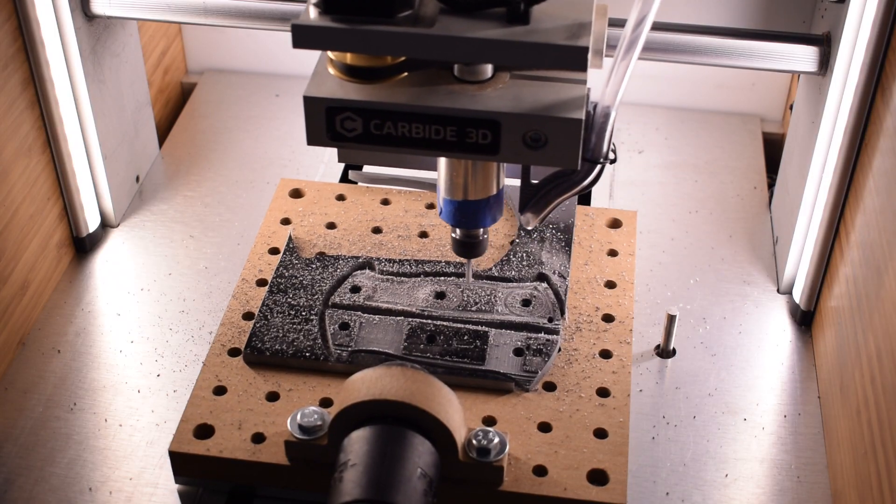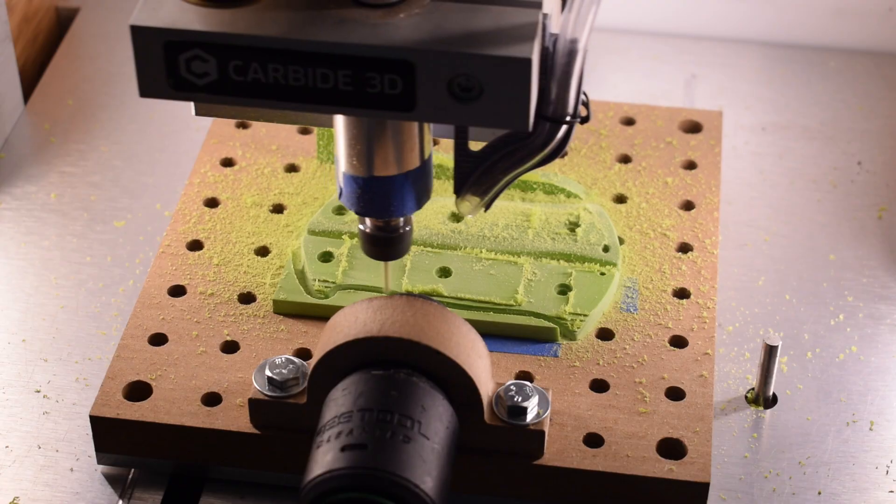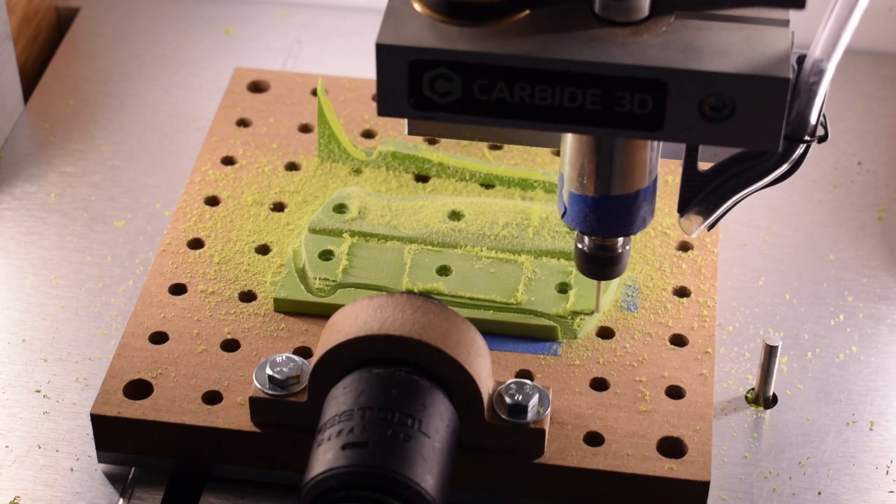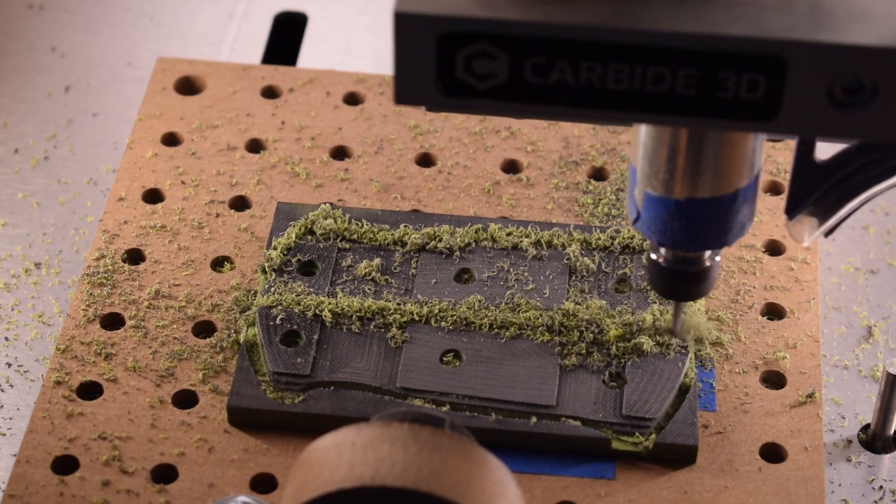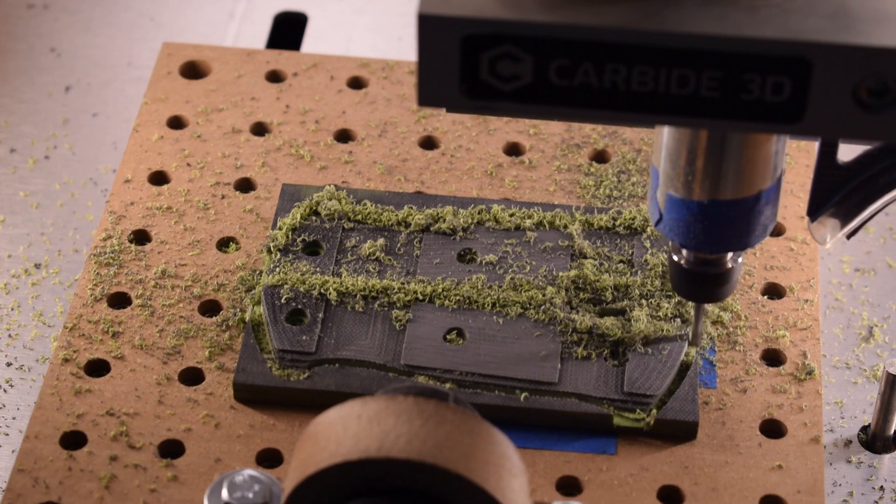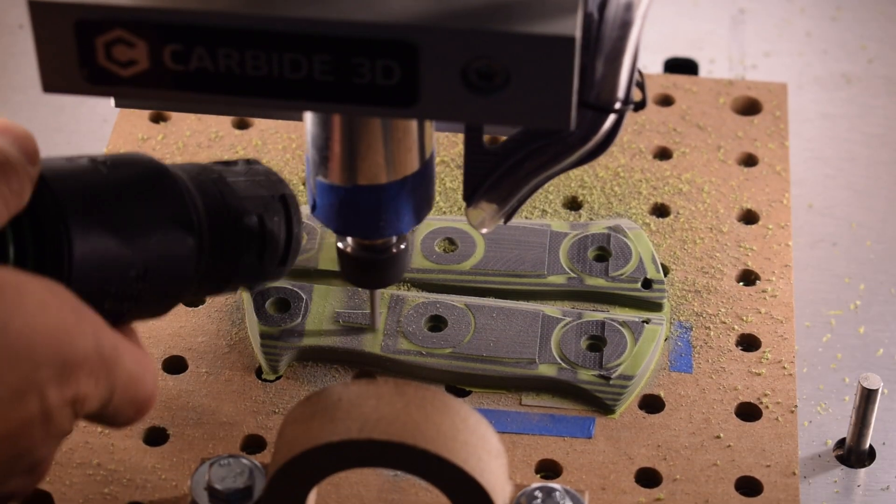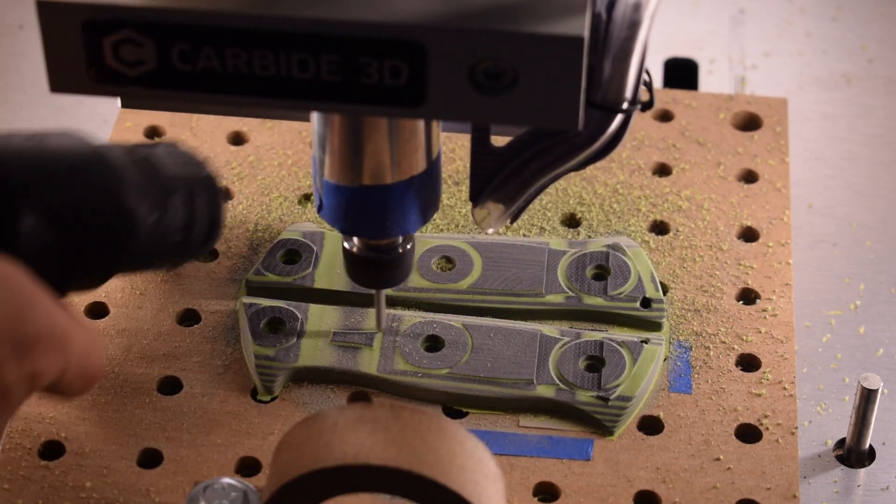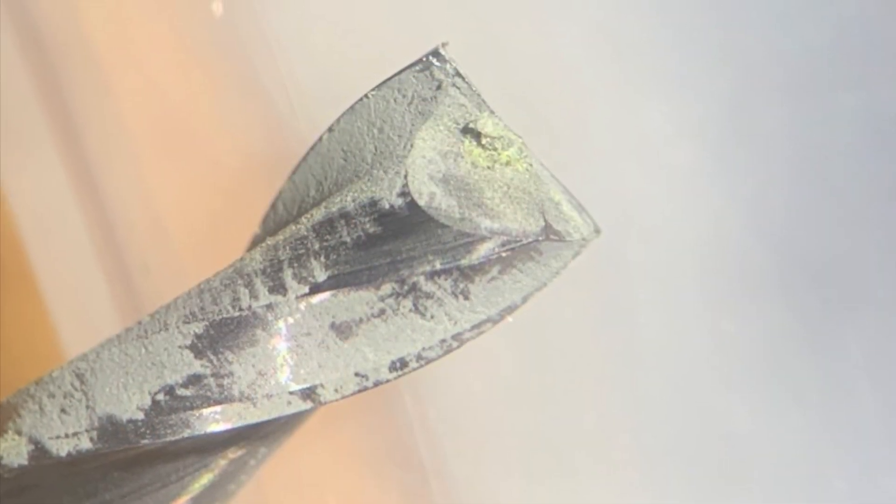As my scale machining progressed during roughing, I noticed the noise levels coming from the Nomad growing over time. By the fourth set of scales, it sounded so bad I was worried enough that I slowed down my feed rate. When my Nomad limped across the finish line, I took a closer look at the endmill and saw that the cutting edge had been noticeably blunted by the G10.